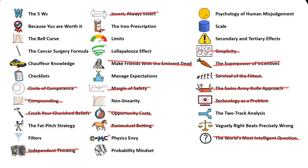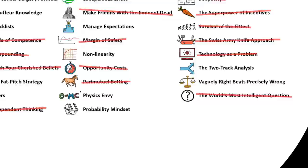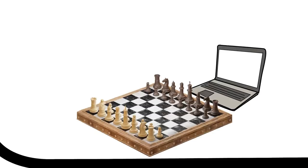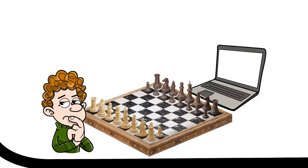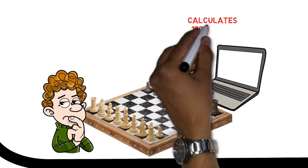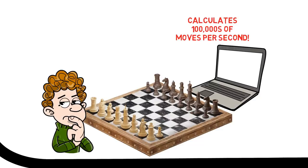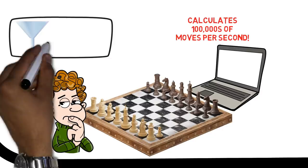Now, let's kick this video off with one of my favorite mental models for the modern investor – filters. Chess computers were first able to beat strong human chess players in the late 1980s, although the crème de la crème were still better than the computers at this point. The machines could make hundreds of thousands of computations per second, many more than any human could ever hope to reach. So how come some humans were still beating the computers? It was because humans used filters, while computers didn't.